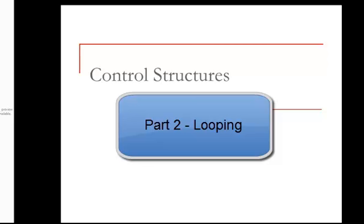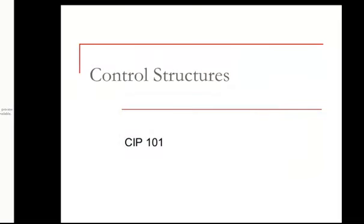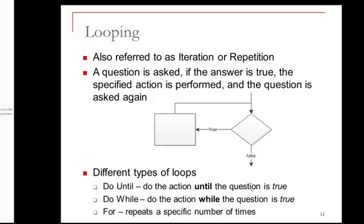Let's look at the concept of control structures and learn about the three basic control structures that we'll use when developing our programs. The third type of control structure is looping, also called iteration and repetition.